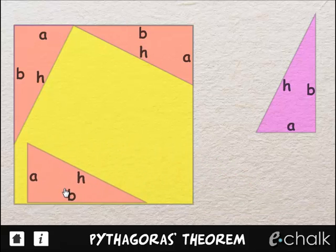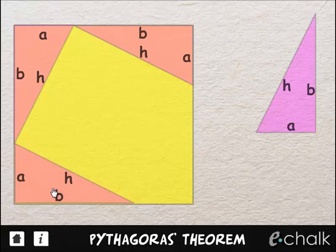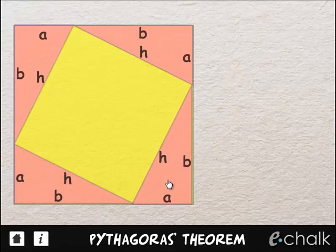And what we need to do is bring in the triangles to the large square so they fit like this. There we go.